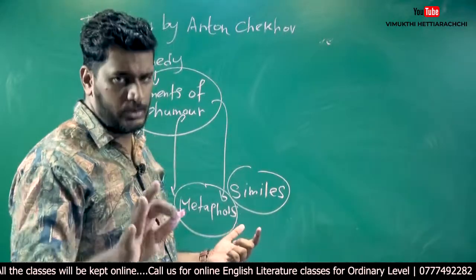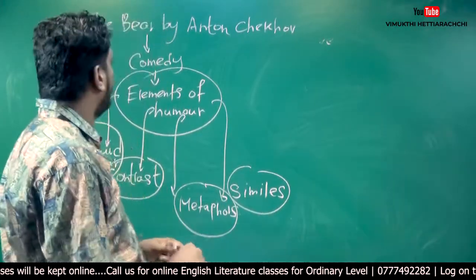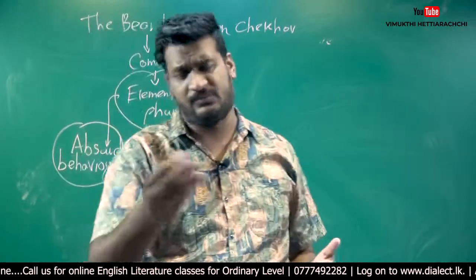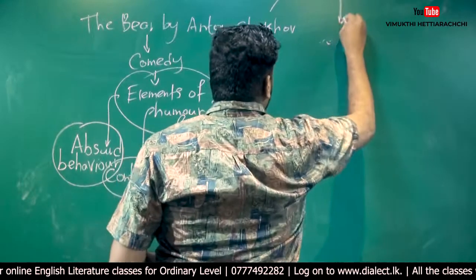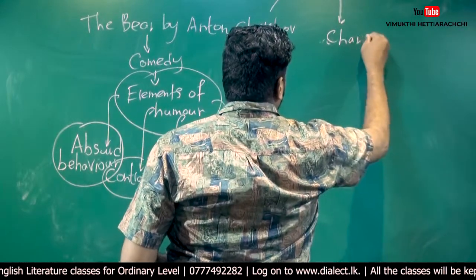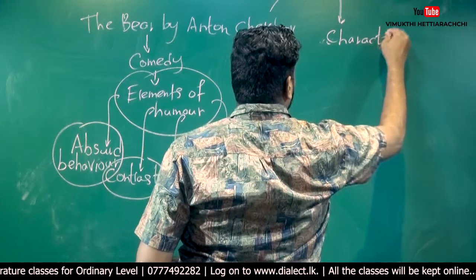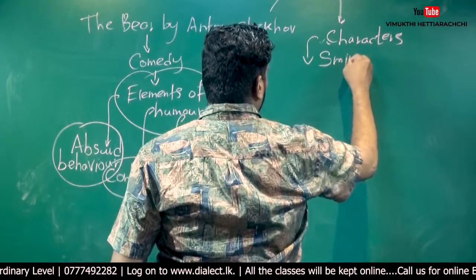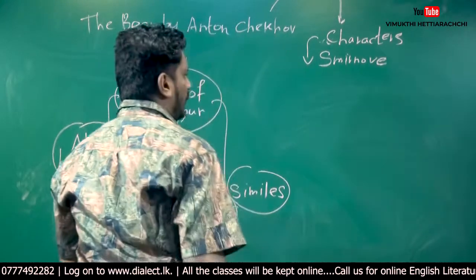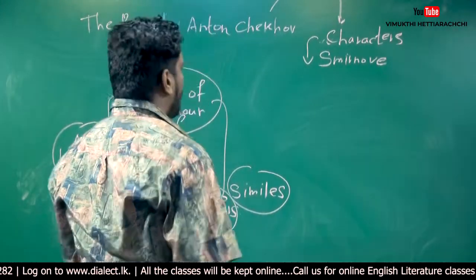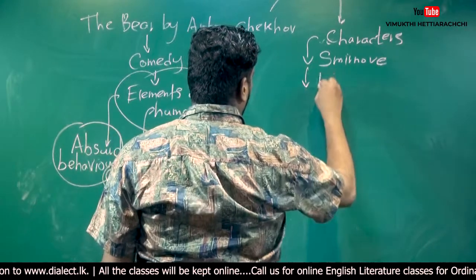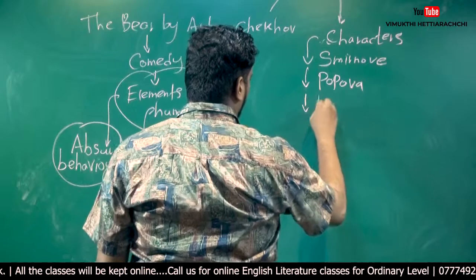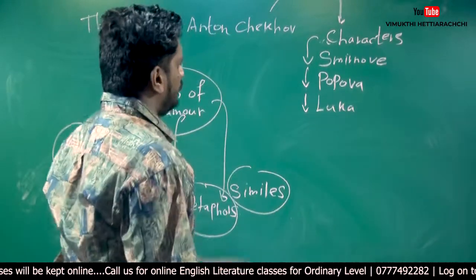There are several quotations you have to remember under each category. If you take the characterization, most questions in past papers are based on characterization. Basically we have three characters: Smirnov, the landowner who comes to Popova's house without any permission; Popova, one of the major characters; and Luca. These are the major characters.